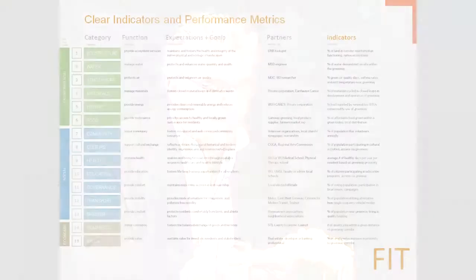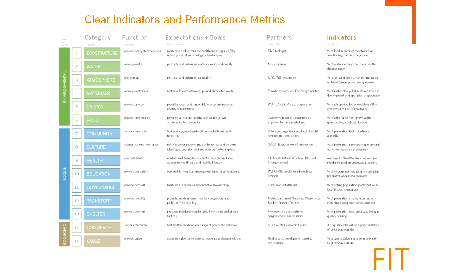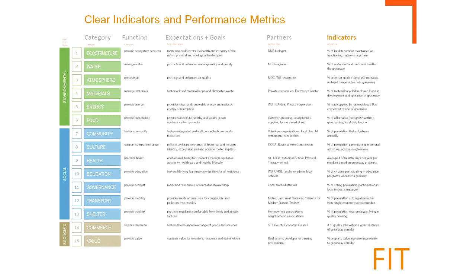We have a process called fully integrated thinking, where we try to look at 15 different variables as they relate to the biological world, how it relates to the cultural aspect of our buildings, and how it relates to the economic aspect. We put each of our building projects through the lenses of these 15 different variants of biology, economy, and economics. We customize those 14 or 15 subjects based on the goals and aspirations of the design team, the client, and the site. What we're trying to do is use biomimicry as one of our tools to inform the building and reduce its impact from a sustainable design perspective.